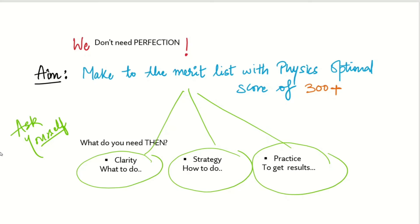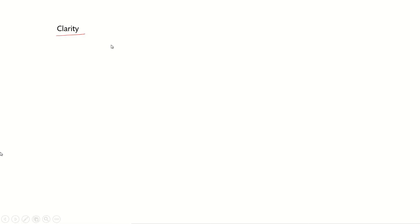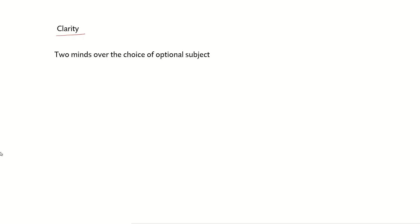Let's discuss clarity in more detail. Clarity means if you have two minds over the choice of optional subject, there is a lack of clarity. If you're not able to convince yourself about the choice of optional subject, you are failing at the very first step. So please, declutter yourself first.